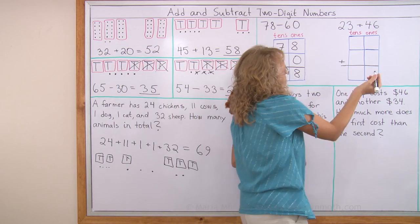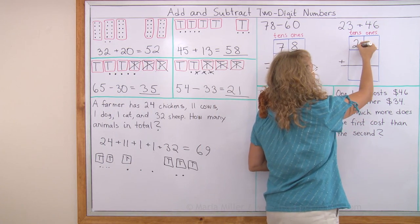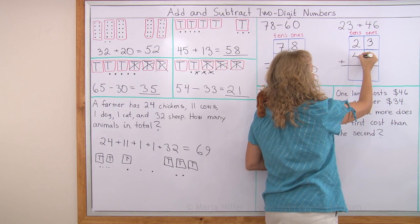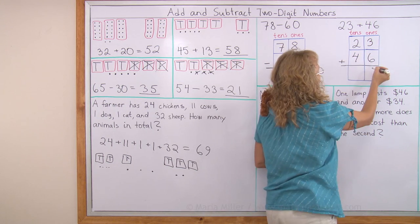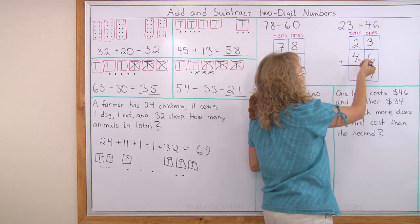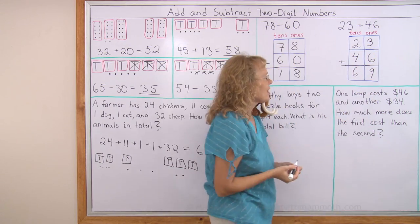Oh, addition. It works the same way. I will just write 23 here. And then 46 here. And now I add my ones. Three plus six, nine. Now I add my tens. Two plus four, six. Answer 69.